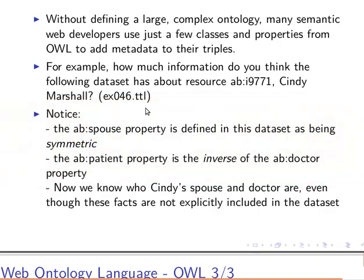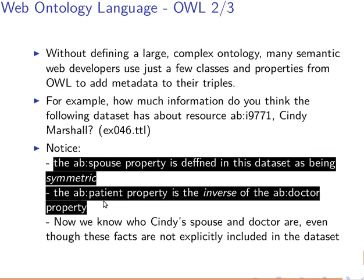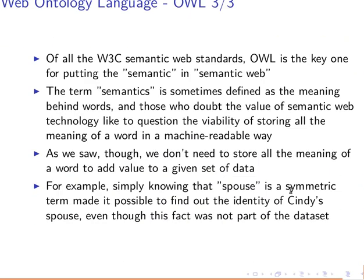This data is not mentioned explicitly, but we can infer it using the properties from OWL — that's how powerful it is. We now know who Cindy's spouse and doctor are even though these facts are not explicitly included in the dataset, because we provided metadata about those properties: spouse is symmetric and patient is the inverse of doctor.